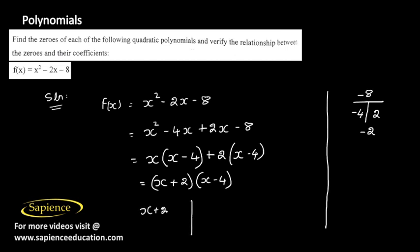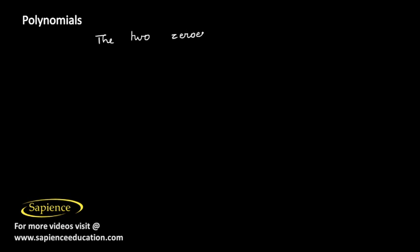So either x + 2 = 0 or x - 4 = 0, which gives us x = -2 or x = 4. The two zeros are 4 and -2.